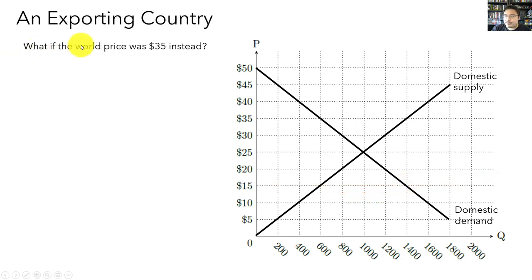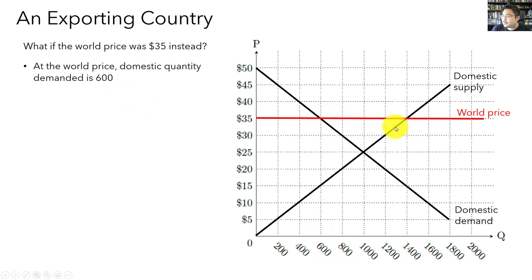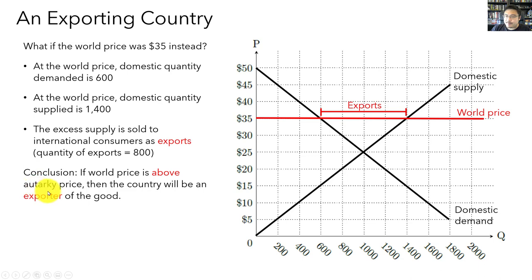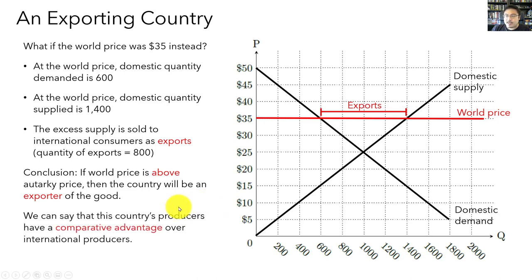Now let's do an example for when the world price is $35 instead of $15. Drawing the world price at $35, we notice that the domestic quantity supplied exceeds the domestic quantity demanded. The domestic quantity demanded is 600, and the domestic quantity supplied is 1,400, so there's an excess domestic supply of 800. The domestic producers are going to sell that excess supply on the international markets as exports. So the quantity of exports will be 800. Our conclusion is that if the world price is above the autarky price, then the country is going to be a net exporter of the good, and this country's producers have a comparative advantage over international producers.